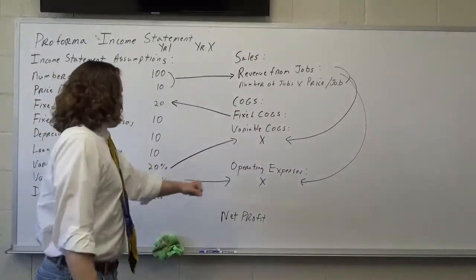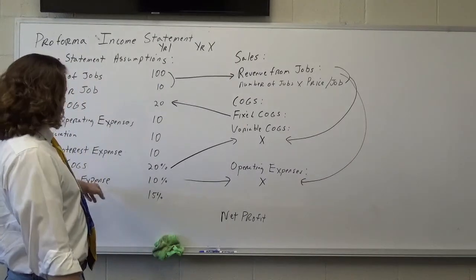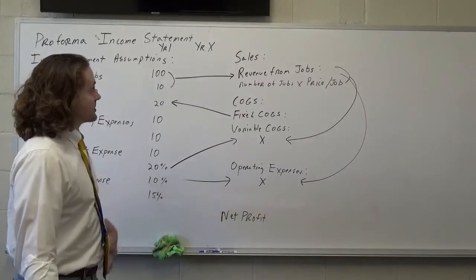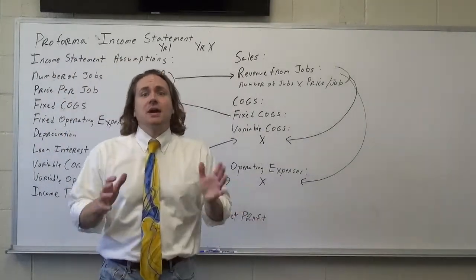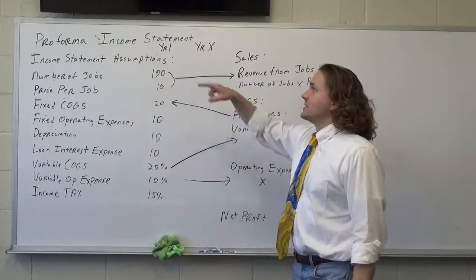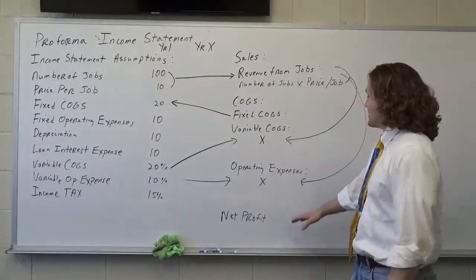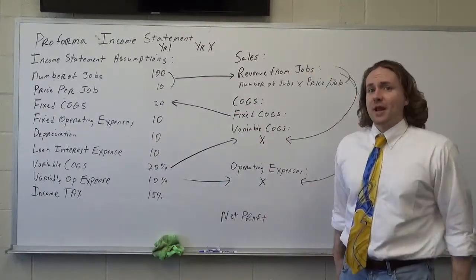Same thing here. If I want to look at operating expenses, I think my variable operating expense is about 10%, and I multiply that times the overall revenue. And again, you're just adding up the same kinds of calculations that you've already done on your previous proforma income statement, and that will give you a proforma net profit.